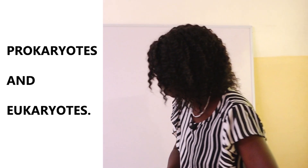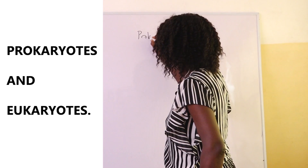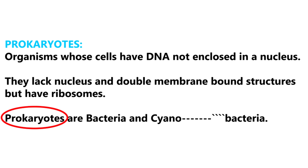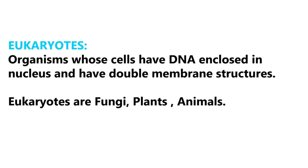Before we look at the three domains of life, let's talk about the two main groups of organisms. Organisms have been put into two main groups: prokaryotes and eukaryotes. Prokaryotes are bacteria and cyanobacteria — organisms that have cells with DNA, but the DNA is not enclosed in a nucleus, so there's no nucleus and no double membrane-bound organelles, but they do have ribosomes. Eukaryotes also have DNA enclosed in a nucleus and have double membrane-bound structures — organelles. Eukaryotes include fungi, plants, and animals.